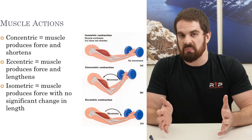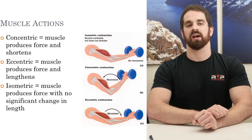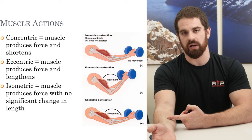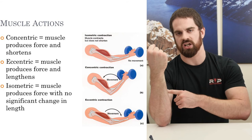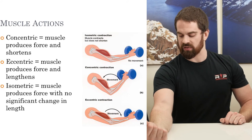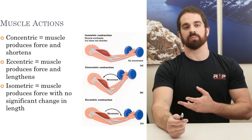There are three main types of muscle contractions. The first is a concentric contraction, where the muscle produces force and shortens. Using the elbow as an example: during a concentric bicep curl, the joint angle decreases as the bicep generates tension and shortens — the insertion end moves towards the origin. The muscle is producing force and shortening.